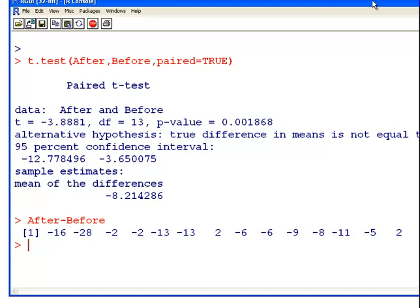For the first case, the patient went down by 16. For the second case, the patient went down by 28. Minus 2, minus 2, minus 13, minus 13. There was one person who went up by 2. Now what we're interested in here is, on average, was there a lessening? And was there a significant difference across this group?